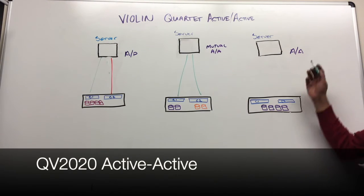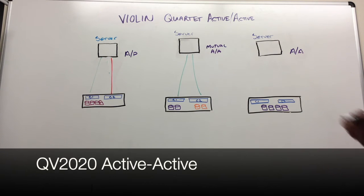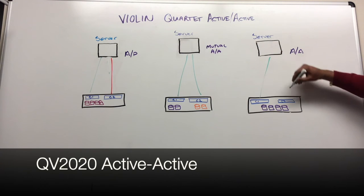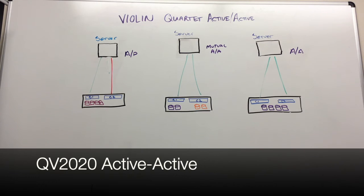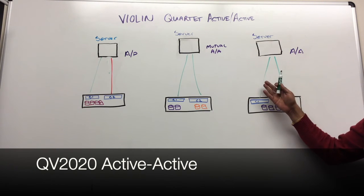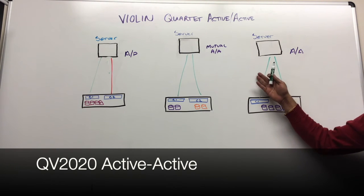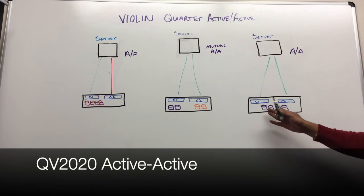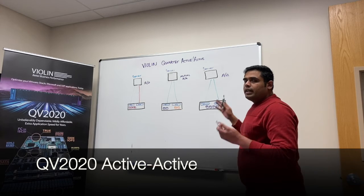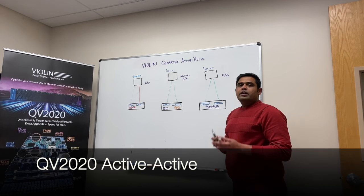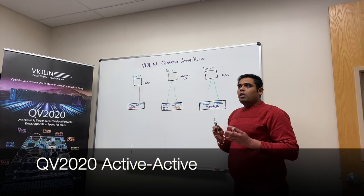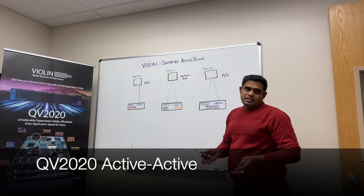The third one is true active-active. In this configuration, all the LUNs will be owned by both controllers. In case of a controller failover, switch failure, or HBA failure, you still have active paths from controller 2. In this scenario, there is no failover, no reduced application rate, and minimal risk of performance impact.